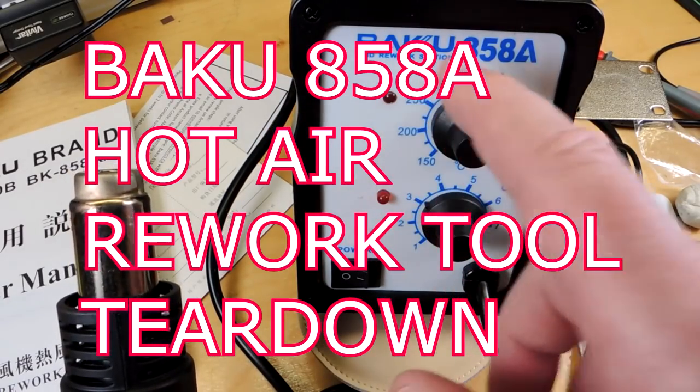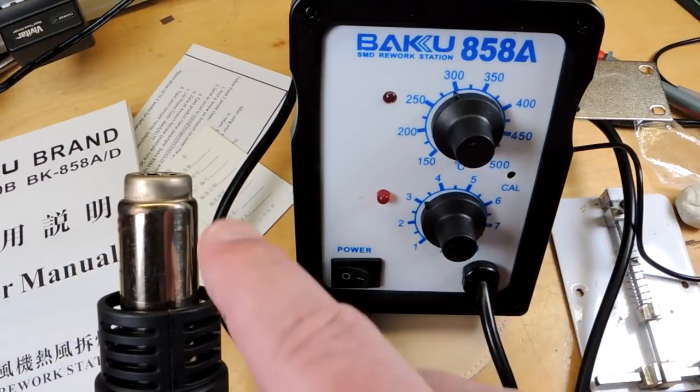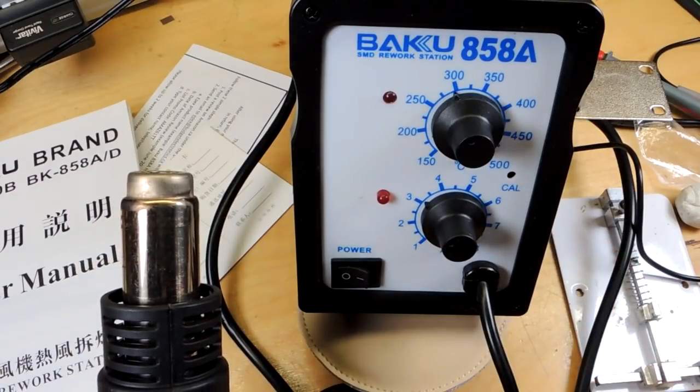Review time. This is a hot air rework tool, the Baku 858A. It has a couple of analog dials and a power switch and of course the wand which produces the hot air.